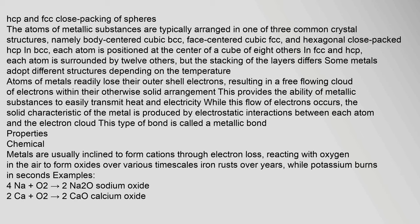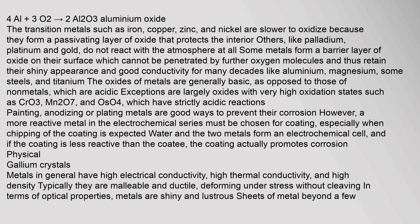Metals are usually inclined to form cations through electron loss, reacting with oxygen in the air to form oxides over various timescales — iron rusts over years, while potassium burns in seconds. Examples: 4Na + O₂ → 2Na₂O (sodium oxide); 2Ca + O₂ → 2CaO (calcium oxide); 4Al + 3O₂ → 2Al₂O₃ (aluminium oxide). The transition metals such as iron, copper, zinc, and nickel are slower to oxidize because they form a passivating layer of oxide that protects the interior.